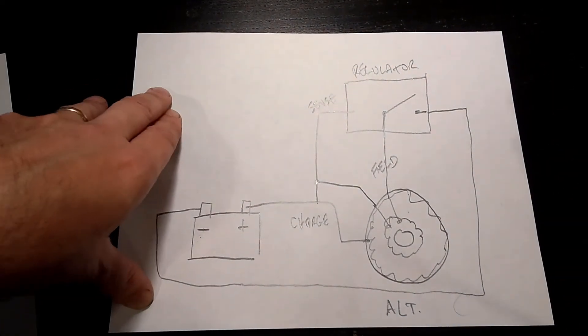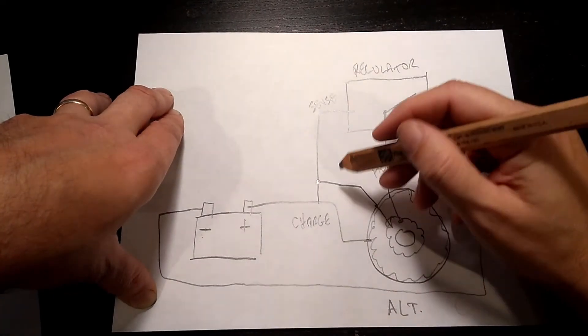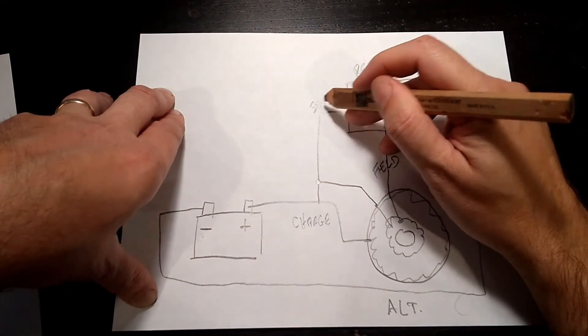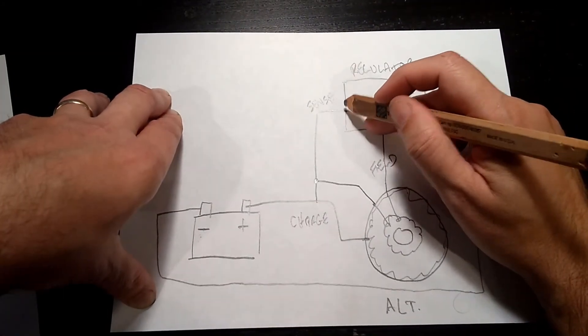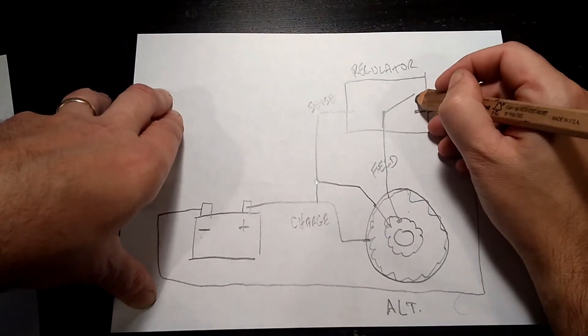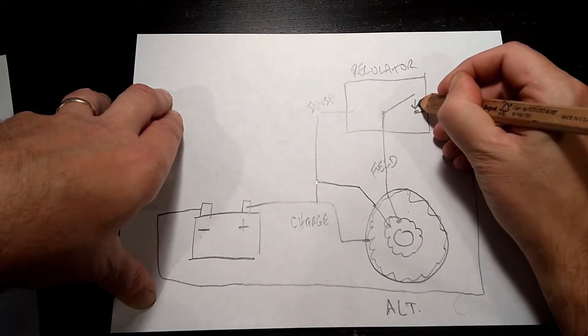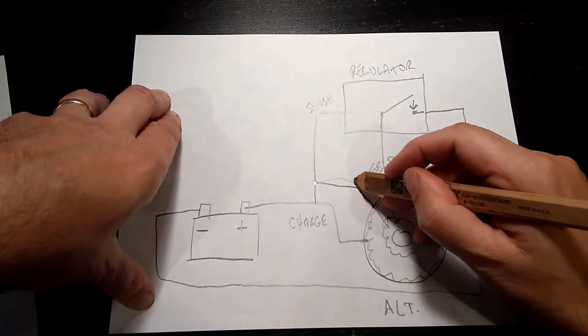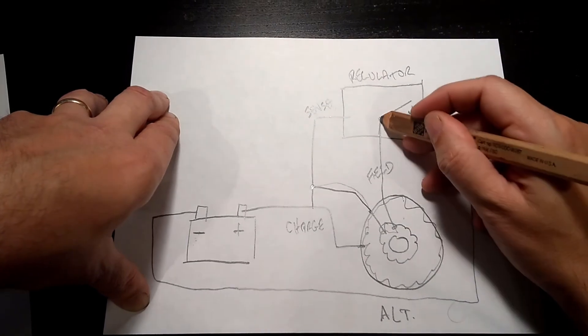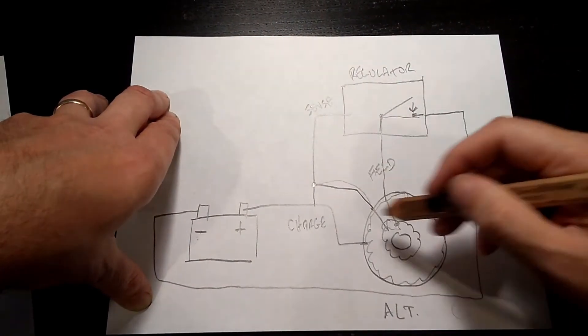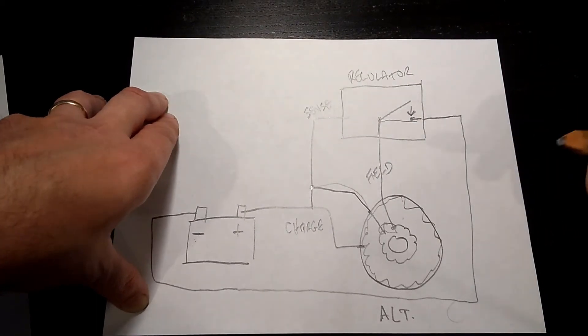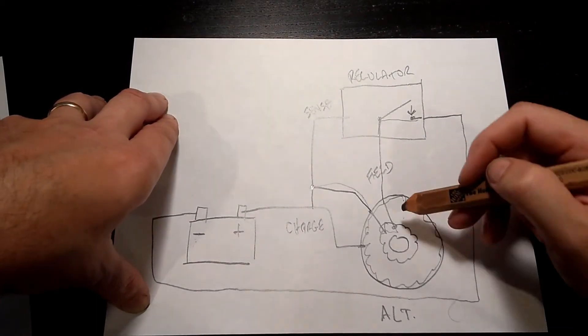So when the vehicle is running, what happens is the regulator is looking at this voltage level. When this voltage gets too low, it closes this switch, which then lets electricity flow down through the field, through here, back to the battery. It connects this circuit. It's just like turning on or off a light switch. So it turns it on.